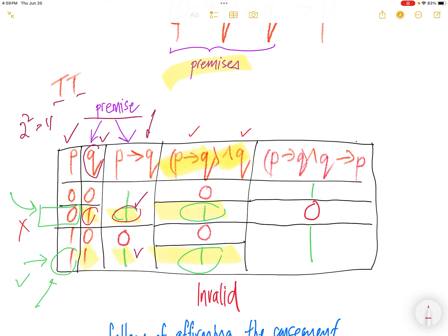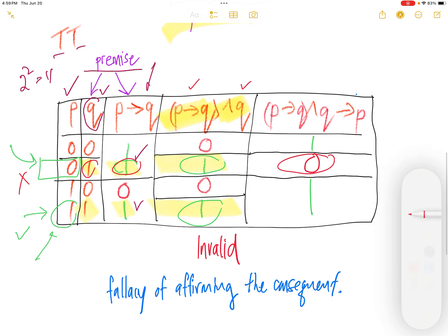So this form of argument is invalid because true and true cannot give you false. It should get you true.